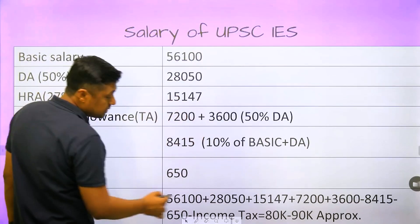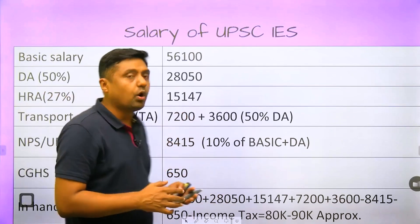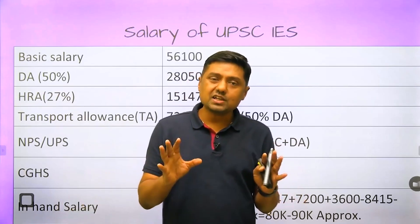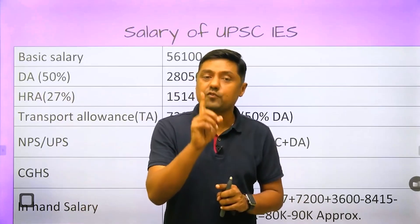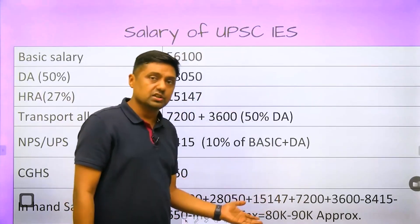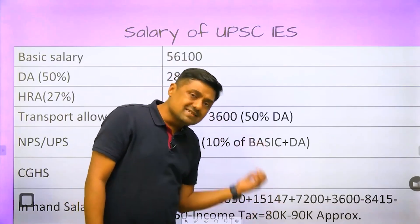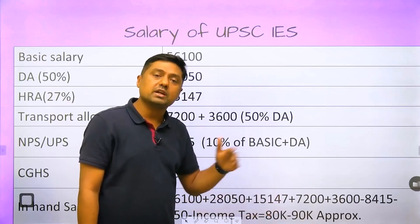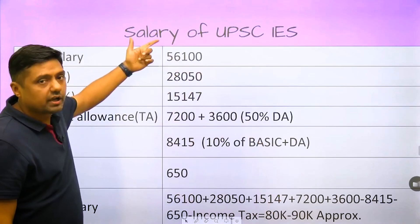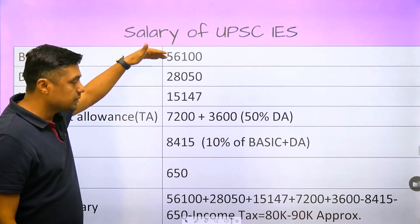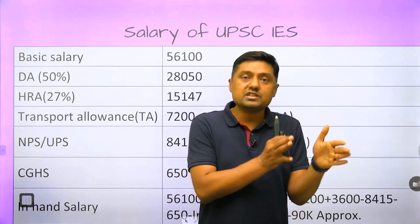The in-hand salary calculation: add ₹56,100 (basic) + ₹28,050 (DA) + ₹15,147 (HRA) + ₹7,200 (transport) + ₹3,600 (DA on transport), then deduct ₹8,415 (NPS) and ₹650 (CGHS), and subtract income tax. After all deductions, you will get around ₹80,000 to ₹90,000 or more in the first year per month. This is an approximate calculation — a handsome amount in the first year, which increases every year with the 3% hike and promotions.